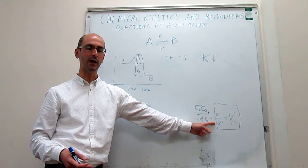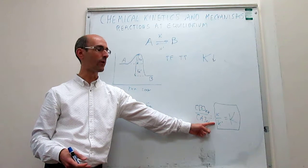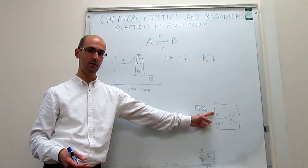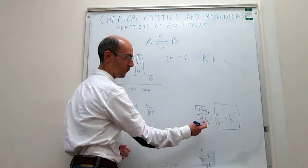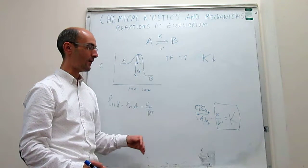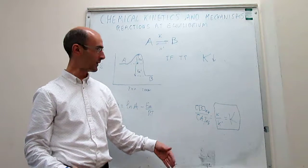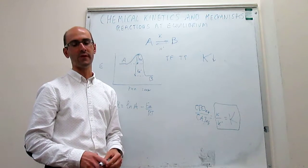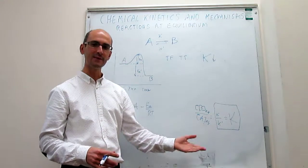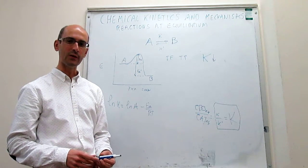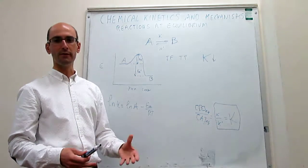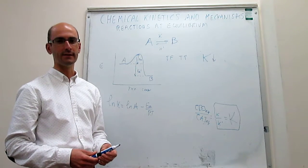Both K and K' grow with temperature, but K' grows proportionally more because Ea' is greater. That means the equilibrium constant K/K' should go down — which is exactly what we had predicted with thermodynamics. We see that this relationship holds even when we try to change the temperature, and everything seems to be falling into place, which lends confidence to the work done in this video.